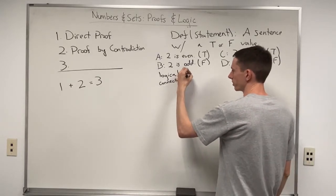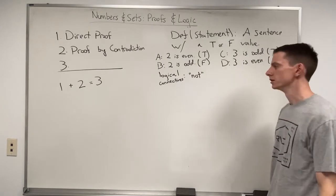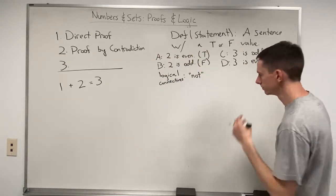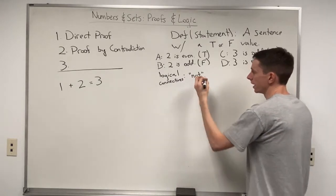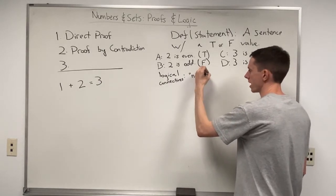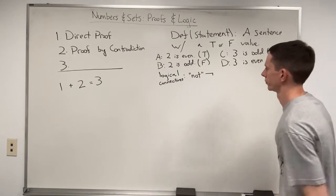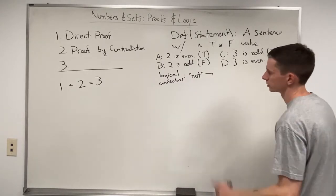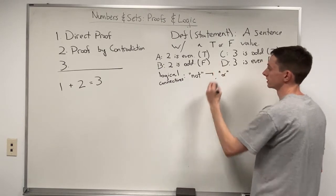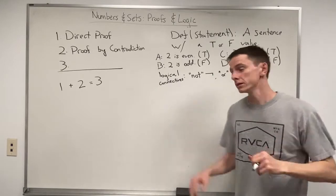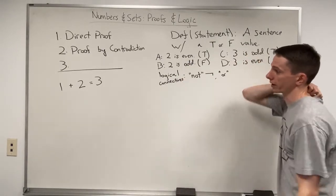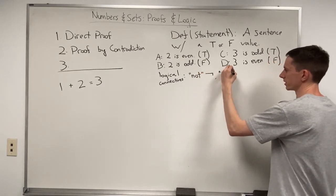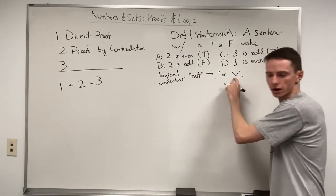The first logical connective is NOT. We can have 'not' of a statement — for example, not A would mean the negation of whatever A's value is. Symbolically, NOT is represented as a horizontal line with a shorter vertical line dropping down. The second is OR, which takes in two statements — kind of like how addition takes in two numbers — and is represented by a symbol that looks like a down arrow, so we'd write A∨B.